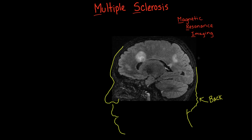Just to be clear, when you say section, you mean like slices — like if you're slicing a loaf of bread? You could think of each one of these as picking up one slice of bread and looking at it. How thick are these slices? You can set that. A common setting is half a centimeter to one centimeter, so they're pretty thin — half a centimeter would be five millimeters.